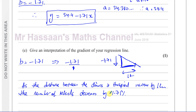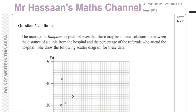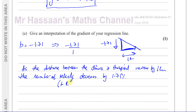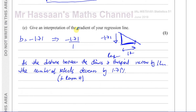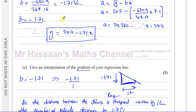You have to give the interpretation in terms of the context of the question. The context here is the distance from the clinics to the hospital and the percentage of referrals to Rampo's Hospital. So: as the distance between the clinics and Rampo's Hospital increases by one kilometer, the percentage of referrals to the hospital decreases by 1.71 percent.